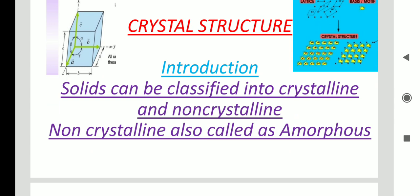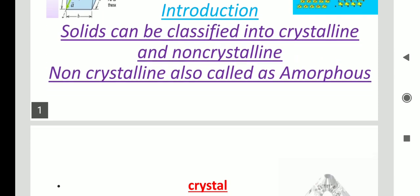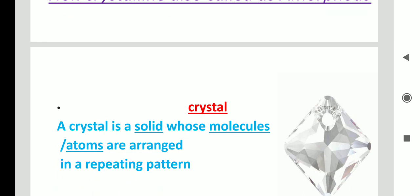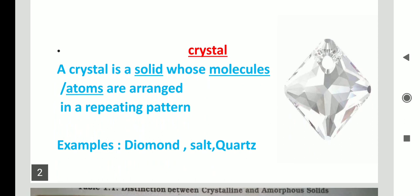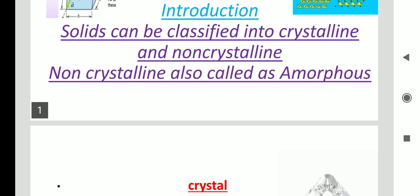In crystalline materials there are mono-crystalline as well as poly-crystalline materials. A crystal is a solid whose molecules or atoms are arranged in a repeating pattern. Examples include diamond, salt, and quartz. In crystal materials, the atoms or molecules must be in a repeating pattern, and this repeating arrangement of atoms is called a crystalline material or crystal.